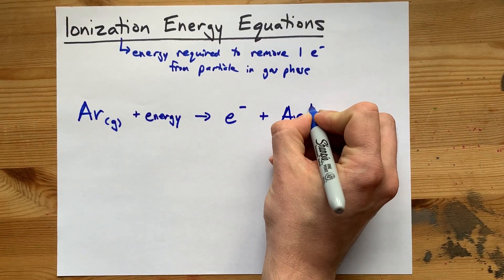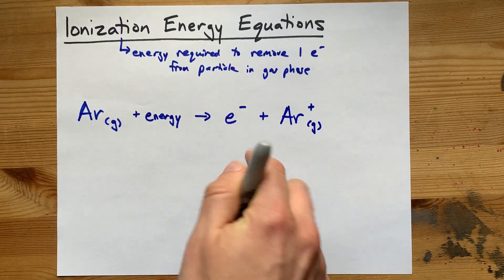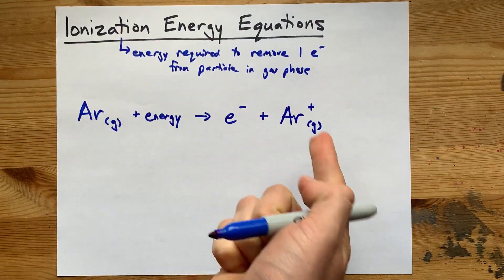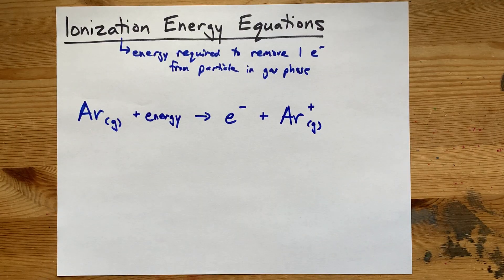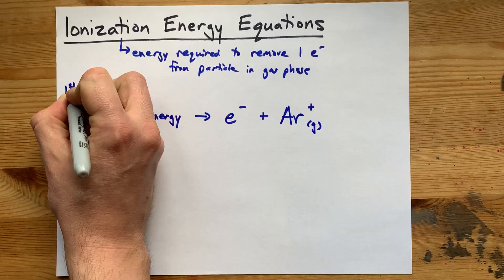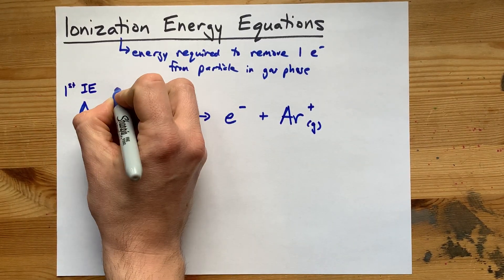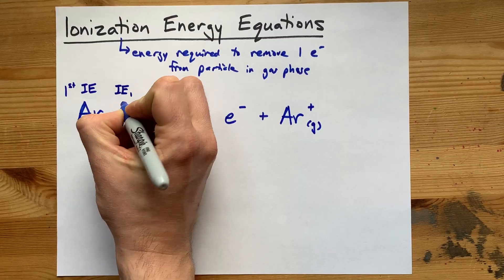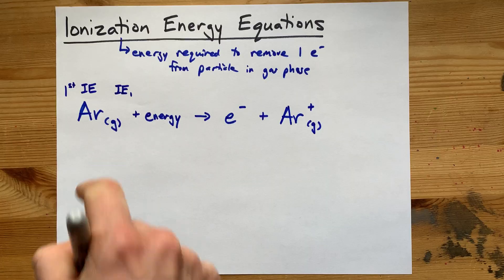You end up with a plus charge. It's still in the gas phase because, by definition, ionization energy is in the gas phase. Here, argon is giving up one electron. This is called the first ionization energy. Some teachers will call it IE₁, first ionization energy.